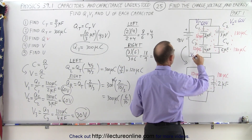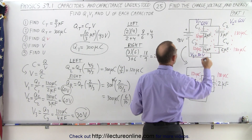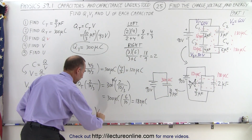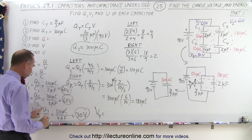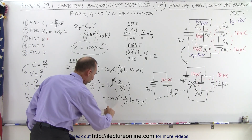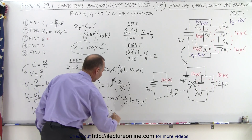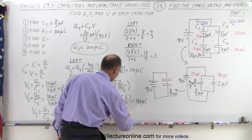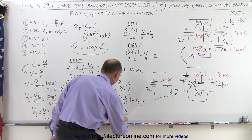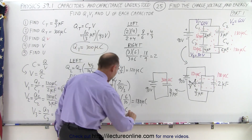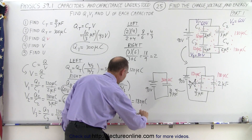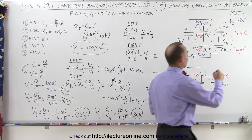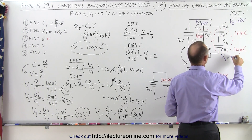So V3 is equal to 30 volts. Finally, the fourth capacitor: V4 equals Q4 over C4, which is the charge of 180 microcoulombs divided by the capacitance of 6 microfarads, and that is equal to 30 volts as well. So V4 is equal to 30 volts.